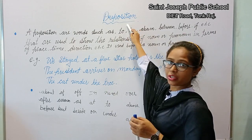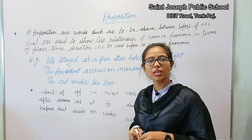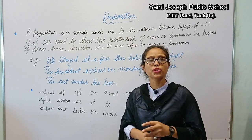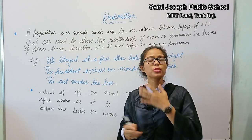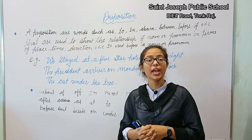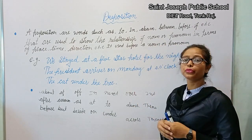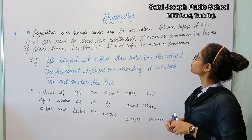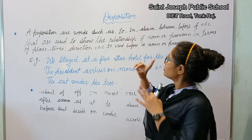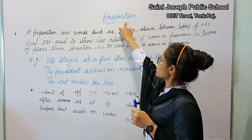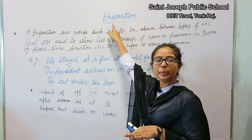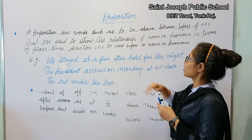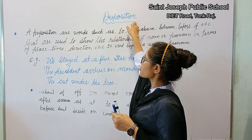Today we start preposition. What is a preposition? A preposition is a word which is used before a noun and pronoun, and it shows the relation with the noun and pronoun. The word preposition comes from 'pre,' meaning before, and 'position,' meaning place — so it is made from 'preposition.'